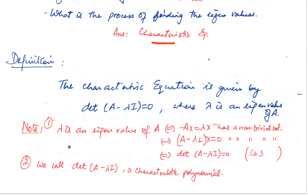Just a reminder: lambda is an eigenvalue of A if and only if Ax equals lambda x has a non-trivial solution. Algebraically, rearranging gives (A minus lambda I)x equals 0, which also has a non-trivial solution. From chapter 3, a homogeneous equation having a non-trivial solution means the columns are linearly dependent, which tells us the determinant of that matrix is 0.